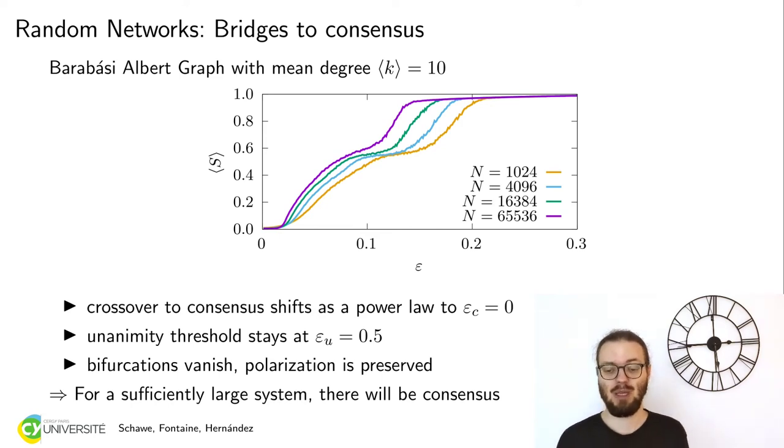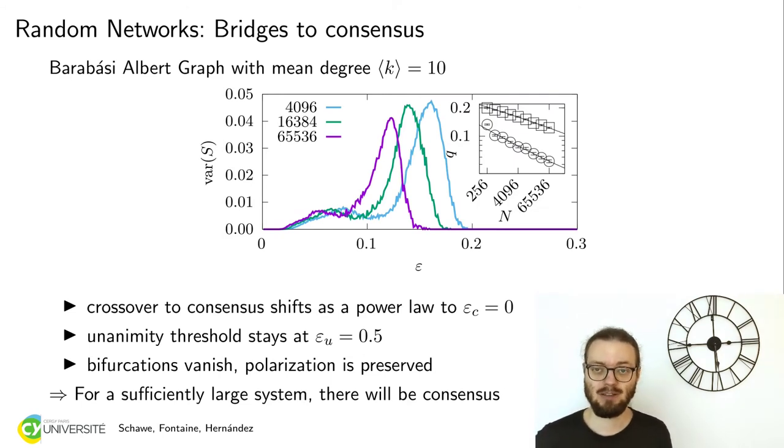To study this, we are looking at the variance. The variance of this observable should be maximal in the steepest point of those downward sloping things. If we look at the variance, you see here two peaks for every size. This is easy to measure. If we look at the positions of the peak of each size and extrapolate that to infinity, which is done in the inset.